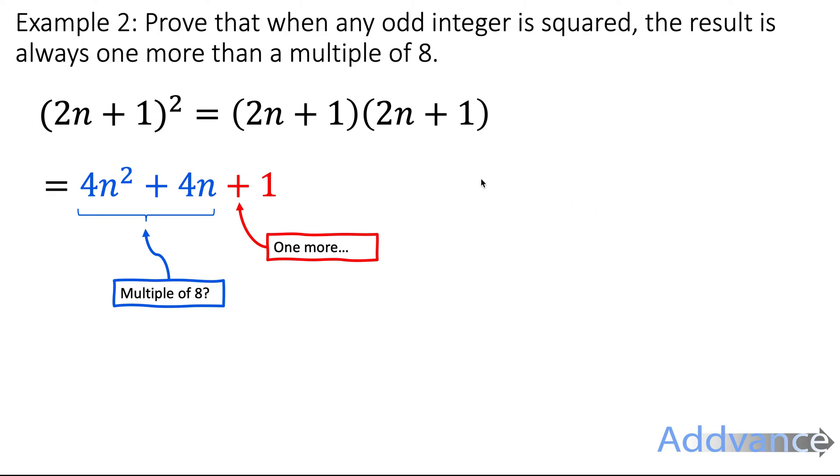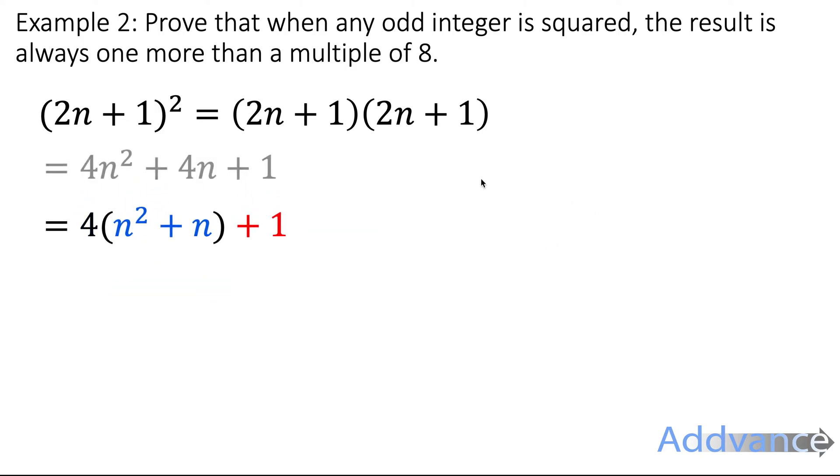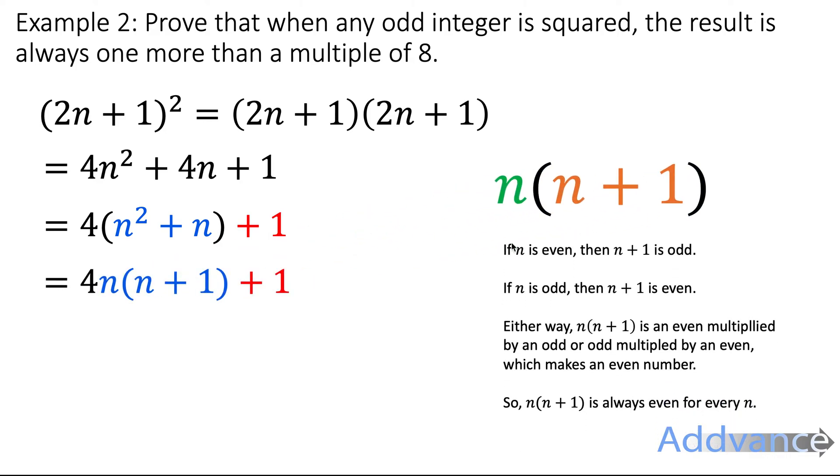Because that's what we want to show: 1 more than the multiple of 8. We definitely have a plus 1 that shows the 1 more. But is this a multiple of 8? Well, let's see if it does work. So 4n squared plus 4n is the same as 4 times n squared plus n, which is the same as n times n plus 1. Again, just factorising. n times n plus 1. Well, if n is even, then n plus 1 is odd. If n is odd, then n plus 1 is even.